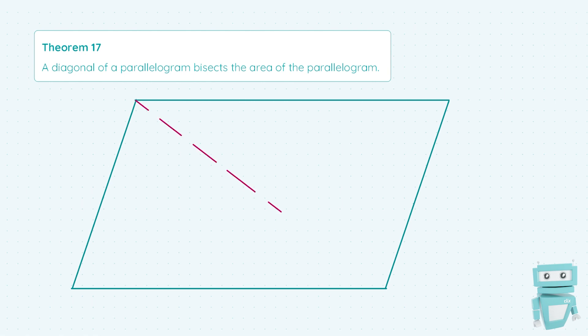So if we just take one of the diagonals of this parallelogram, for instance this one going from the top left corner to the bottom right, if we knew that our total area of this parallelogram was for instance 50 centimeters squared, that would mean that each triangle on both sides of the dotted line would be 25 centimeters squared.